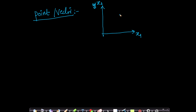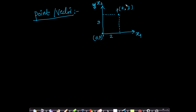Let us assume these are my 2 axes. If I have a point here, geometrically speaking, this is a 2D coordinate system. Let us assume I have a point P. How do I represent this point? I represent it with two values — the first value corresponding to how far the point is from the origin. This point is, say, 2 units away on x1, so this point has x-coordinate 2 and y-coordinate 3.